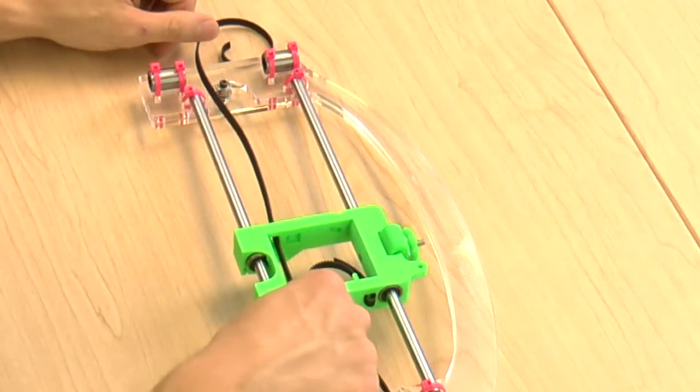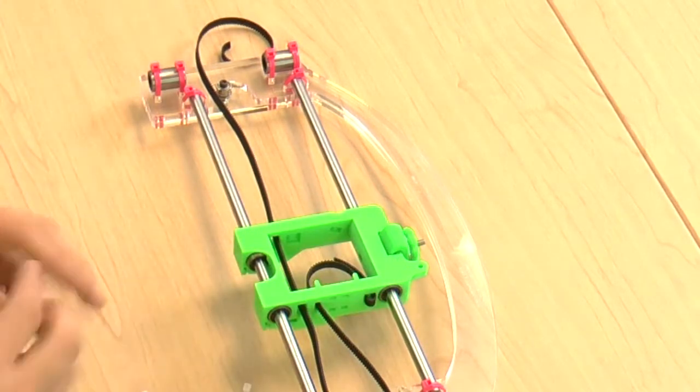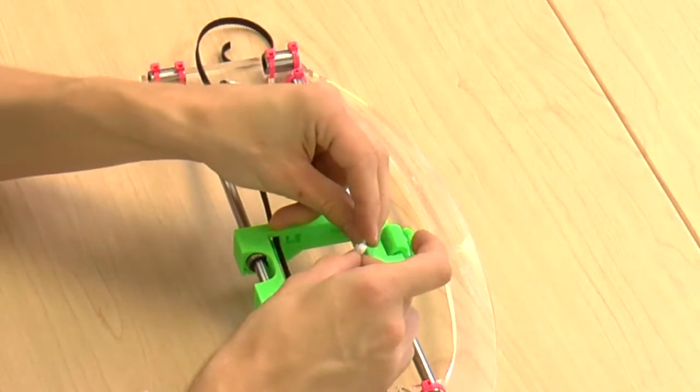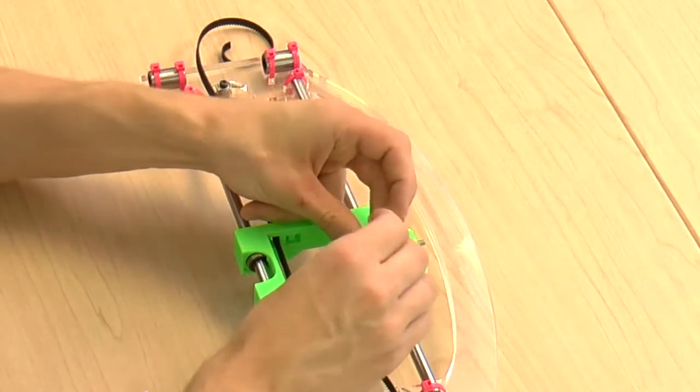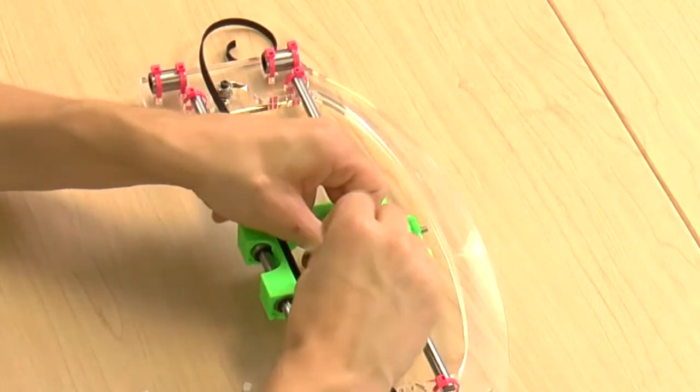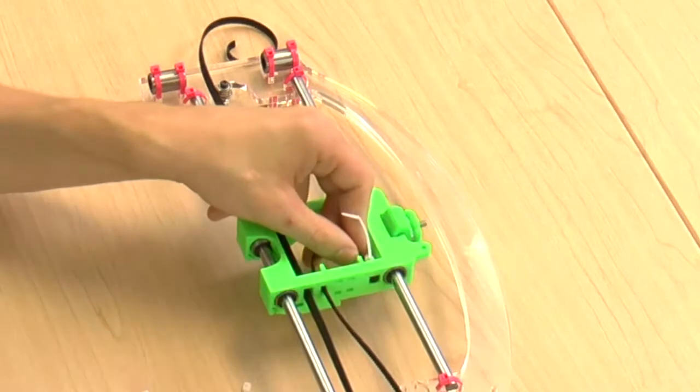Then you will go back into the X carriage and make a little loop at the end. And we are going to use one small 4-inch zip tie to press the teeth of the belt against each other, thus forming a secure loop.